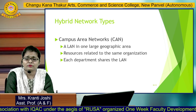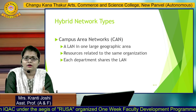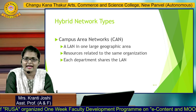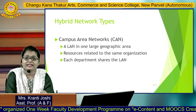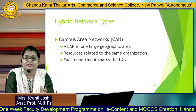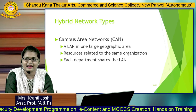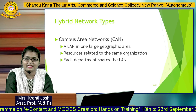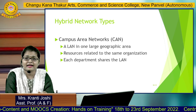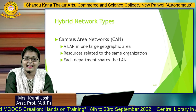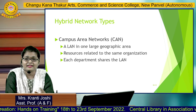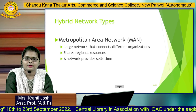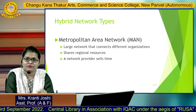Next are hybrid network types, used in specific places. First is CAN — Campus Area Network. It is a LAN in one large geographical area where different LANs are available across departments. Resources are related to the same organization; each department has its own LAN and those LANs connect to one main network — the campus area network. These networks are used in colleges and universities.